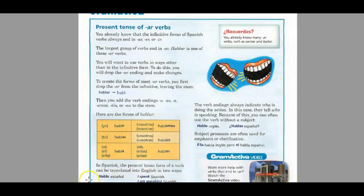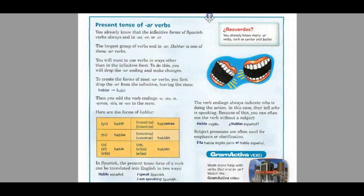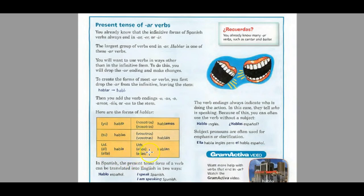The last form is hablan — ustedes hablan, which is 'you plural,' and ellos/ellas hablan, meaning 'they speak.' In Spanish the present tense can be translated two ways: hablo español means either 'I am speaking Spanish' or 'I speak Spanish' — they're the same. The verb endings always indicate who's doing the action, so you can often use the verb without a subject. Subject pronouns are used for emphasis or clarification, for example: ella habla inglés pero él habla español.